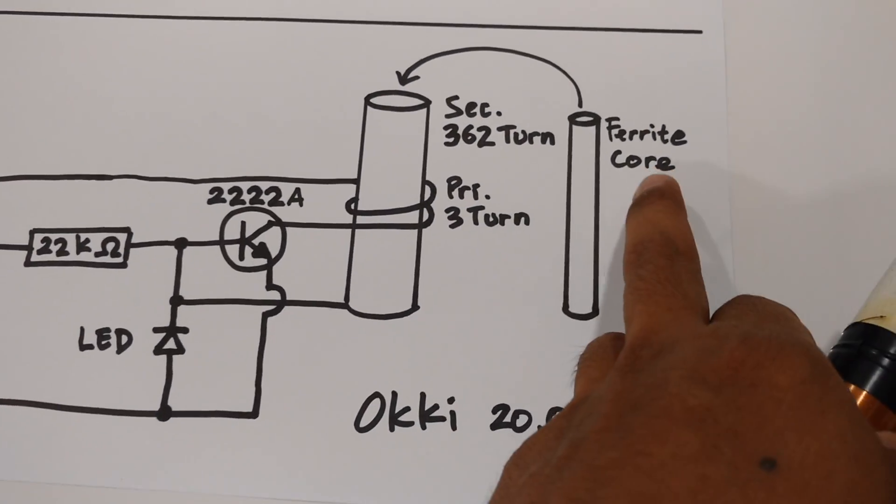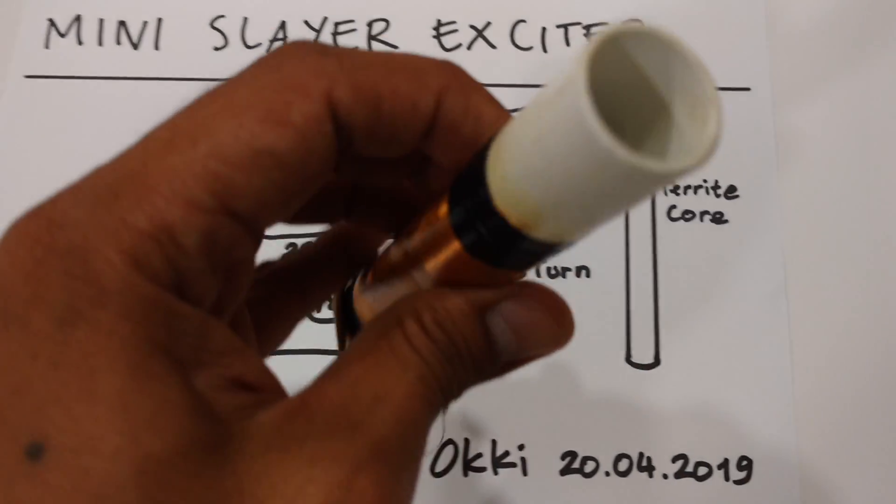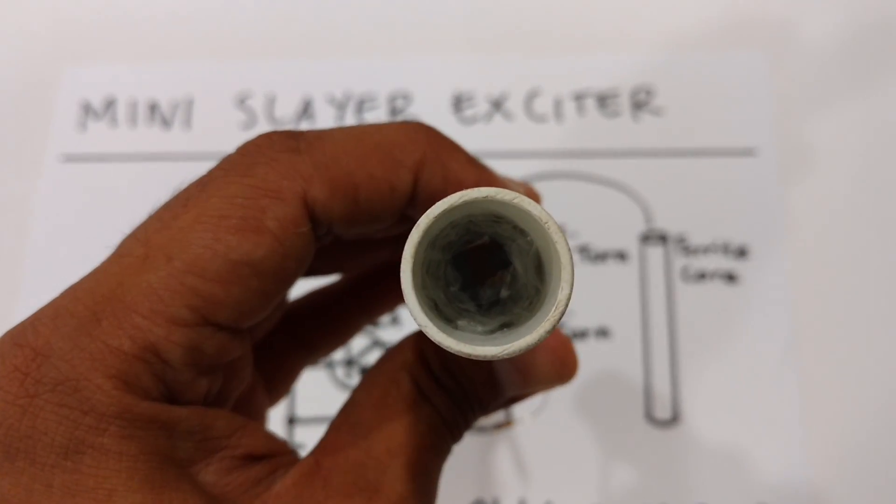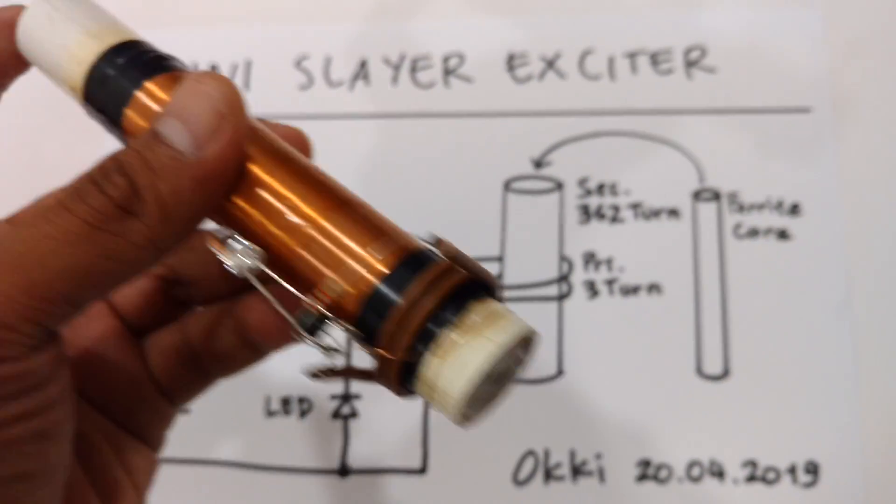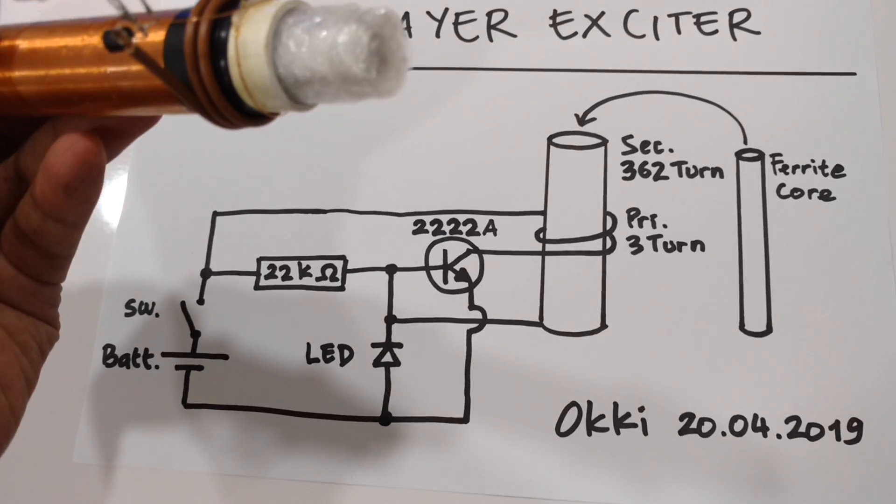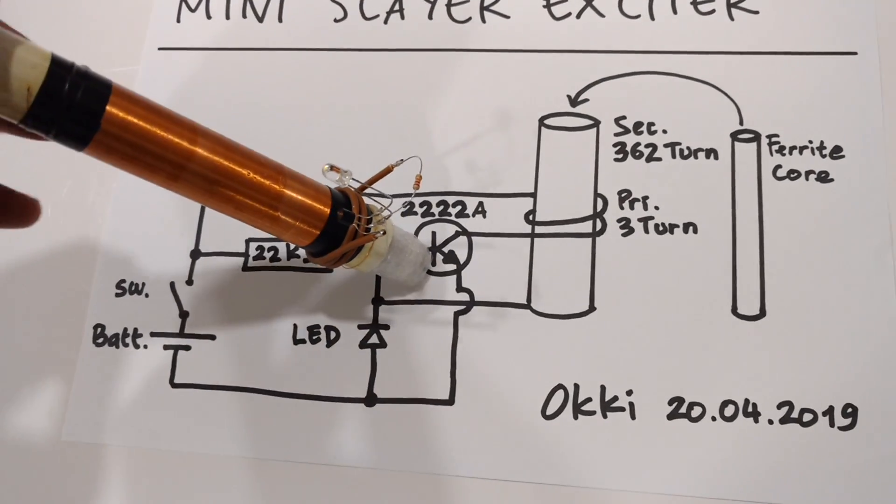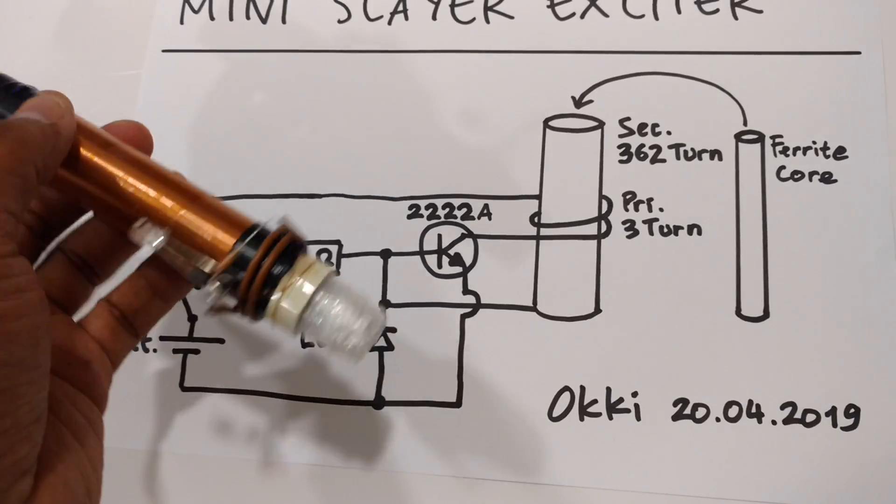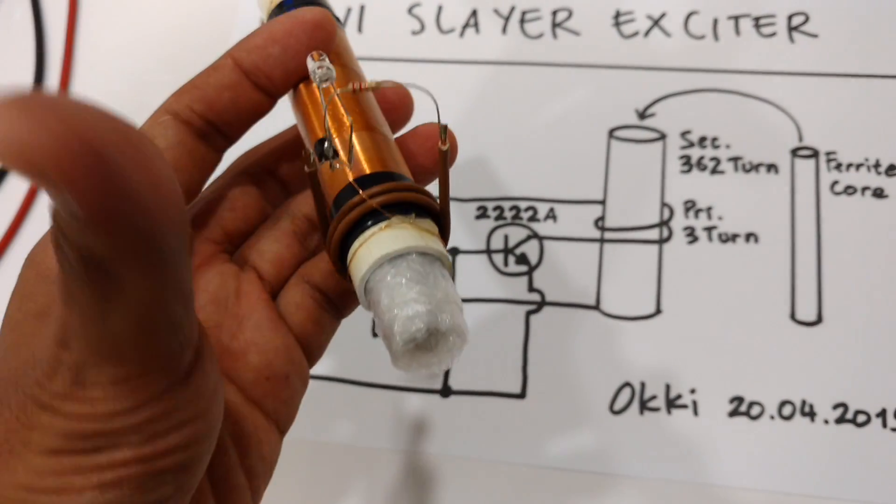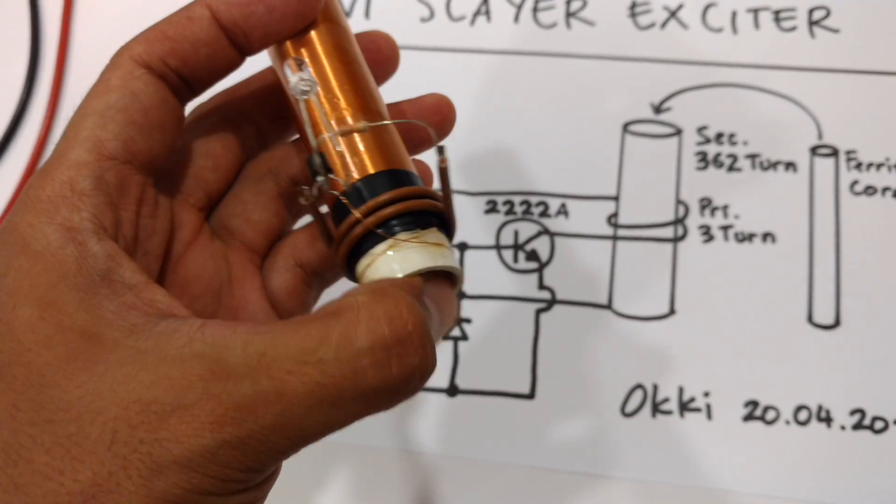Here I have a ferrite core inside of this secondary coil. Without this ferrite core, this small Slayer Exciter will not oscillate.